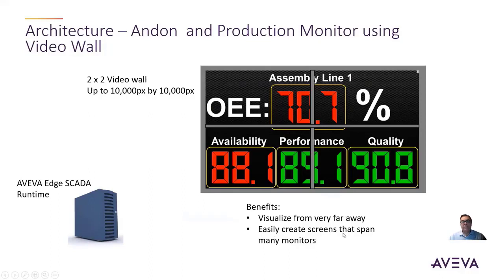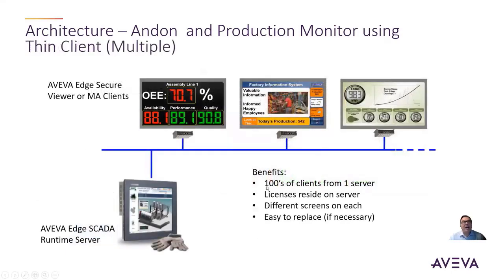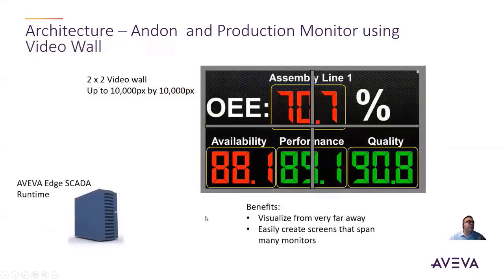This gives you the ease of creating screens that span multiple monitors very easily from one runtime. As I mentioned on the previous slide, you can have hundreds of these clients off of one individual server. This is not a video cable — it's a network. Each of these could be different screens or the same screen, depending on where it's located: whether it's in a manufacturing cell, a zone, a region, a cafeteria, and so on. Lots of different capabilities when it comes to that.